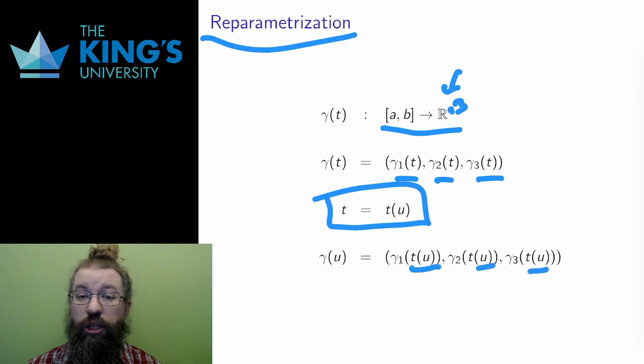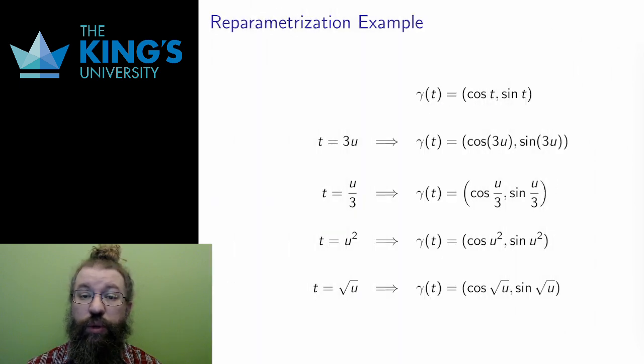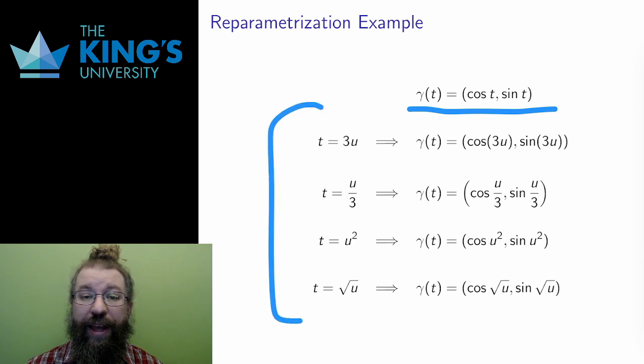So, let me reparametrize the circle. Here is the parametric description of the circle from last week's video, along with four potential replacements. Each replacement is an expression in the new variable u, used to replace t, and each is monotonically increasing.